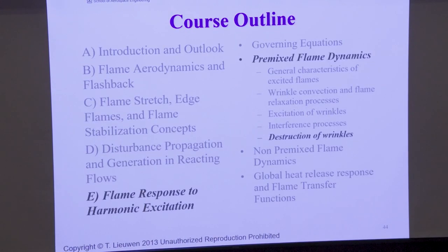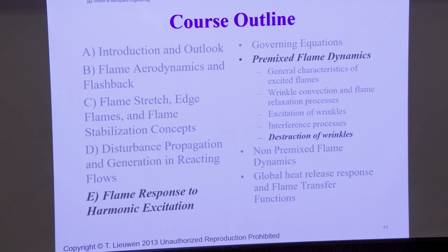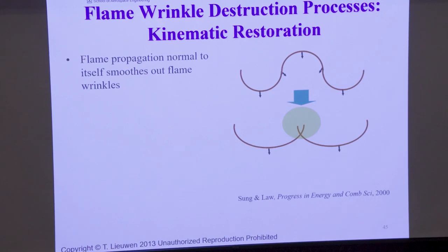I've talked about how flames propagate disturbances, where disturbances come from, and how you can get interference effects that manifest themselves on the flame sheet. Now I want to talk about how disturbances go away — I've talked about how they're created, but not how they go away. It turns out that premixed flames have some really interesting dynamics because of the fact that they propagate normal to themselves.